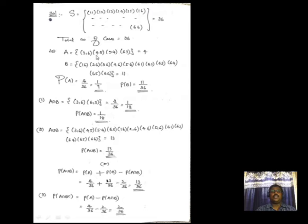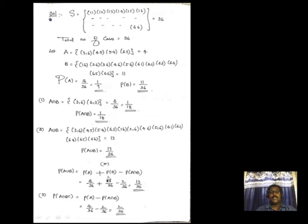Now we find P(A ∩ B). The common elements between A and B are (3,6) and (6,3), giving 2 elements. So P(A ∩ B) = 2/36 = 1/18. For P(A ∪ B), using the addition theorem: P(A ∪ B) = P(A) + P(B) − P(A ∩ B), substituting gives 13/36.